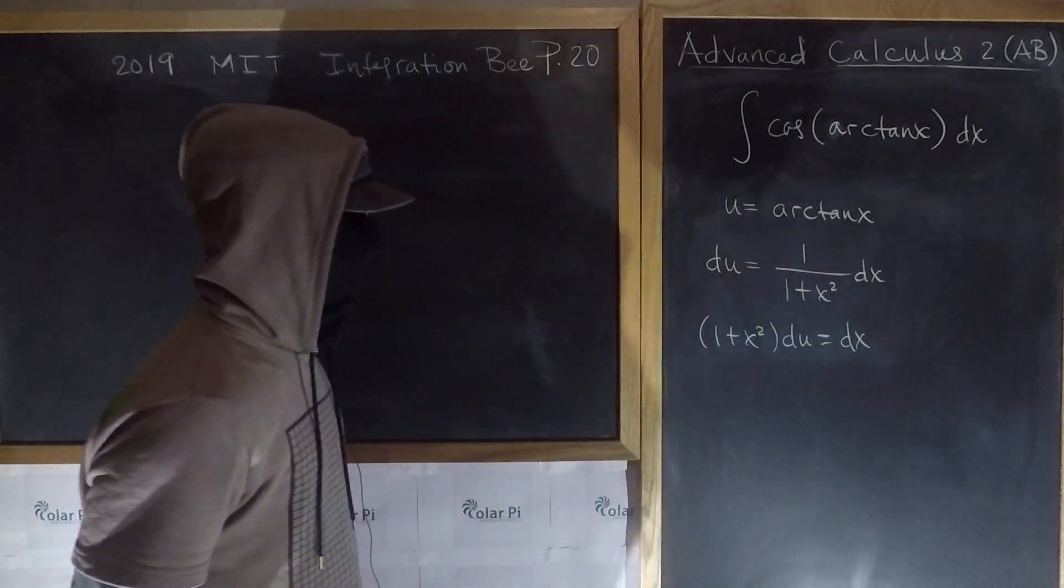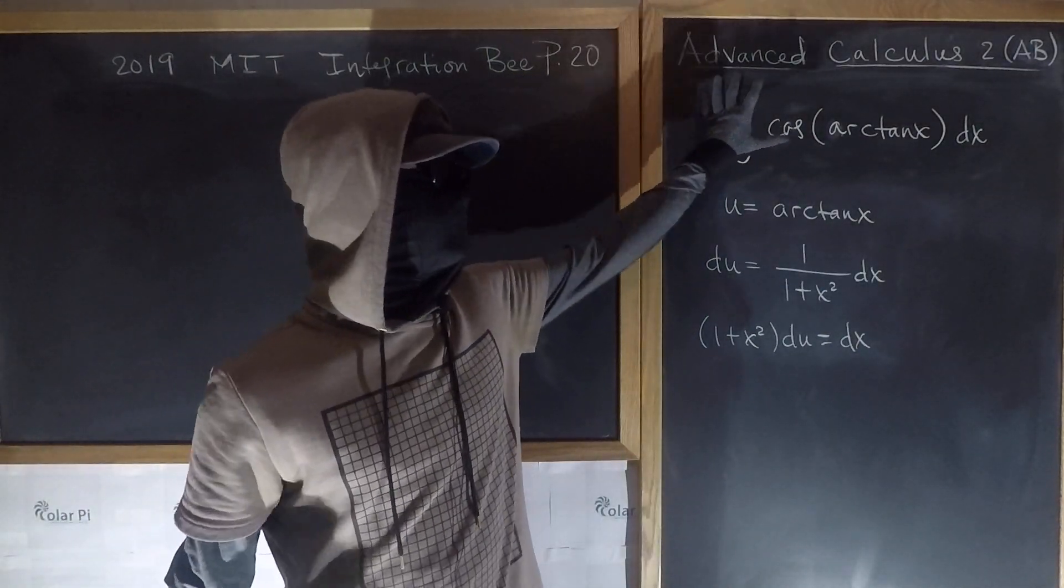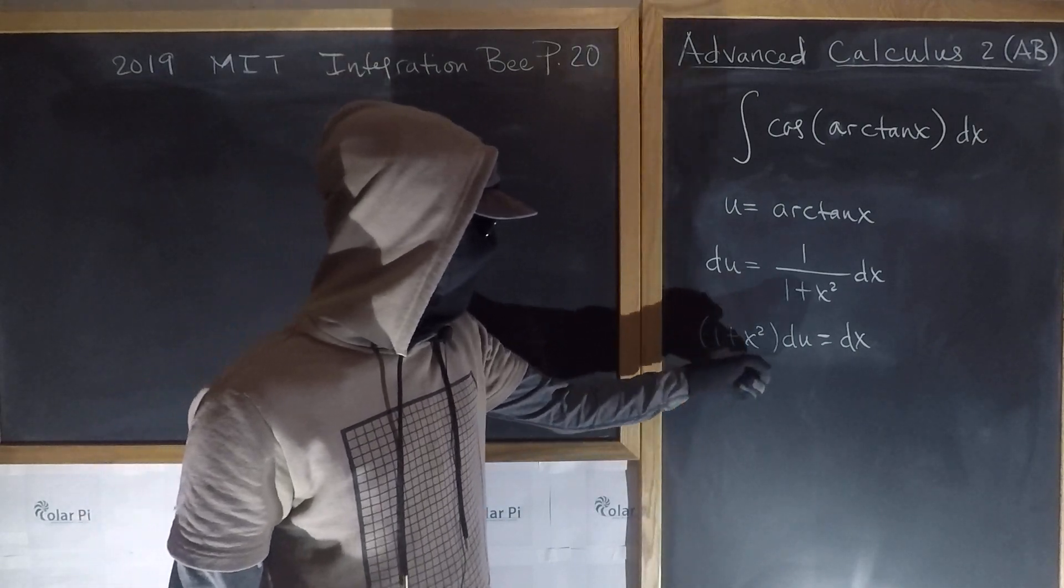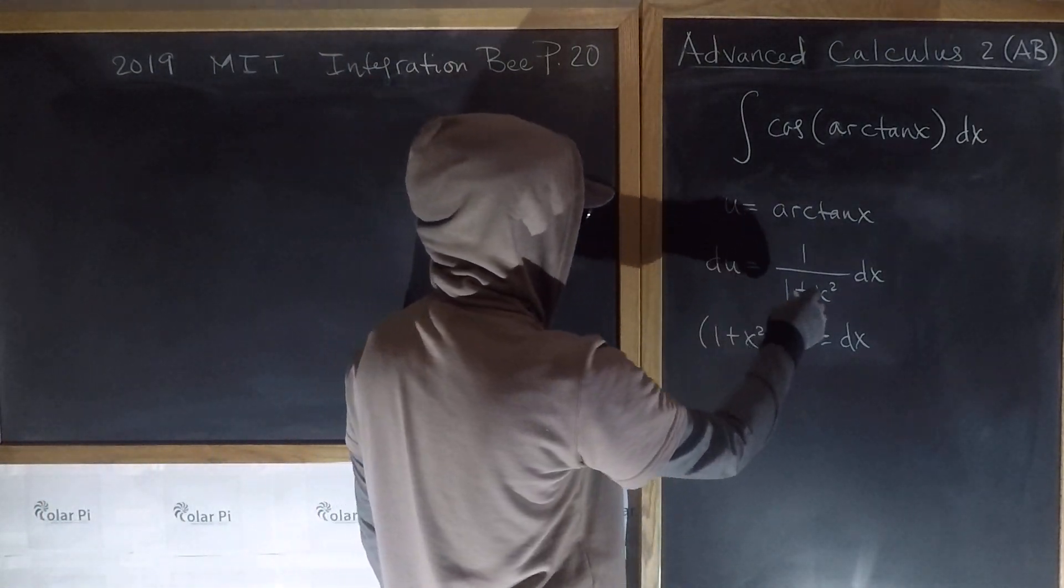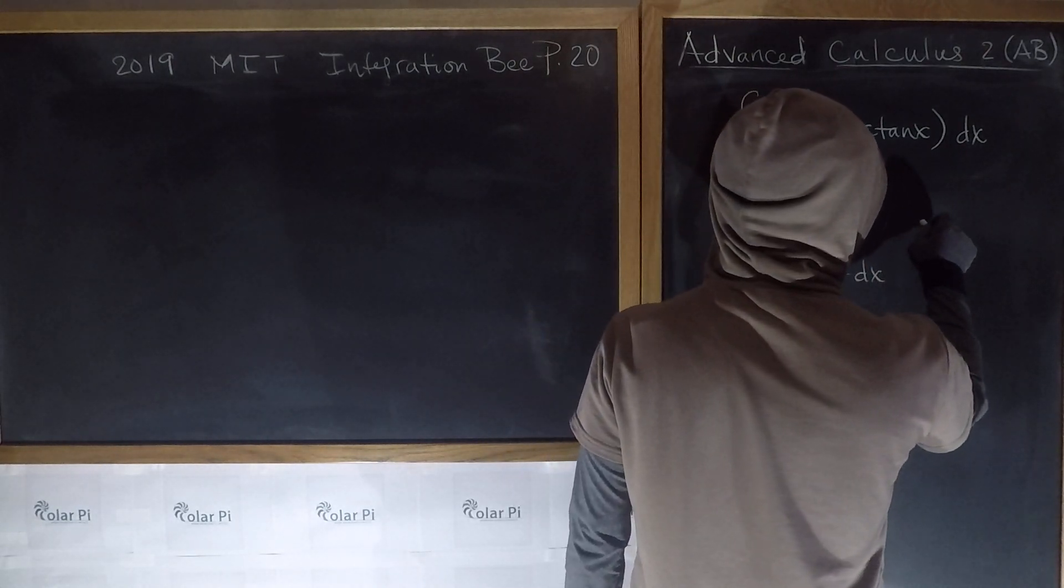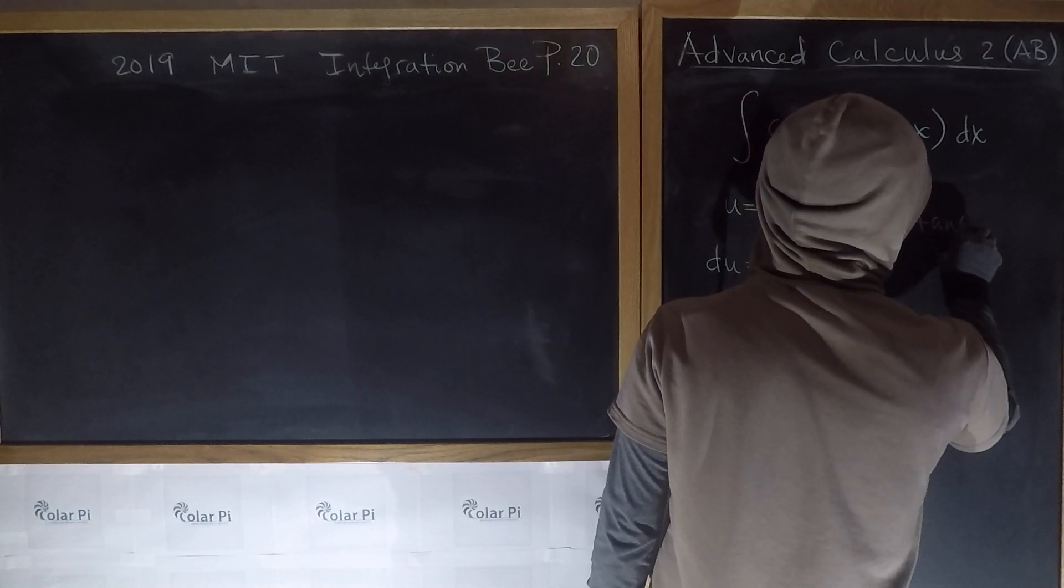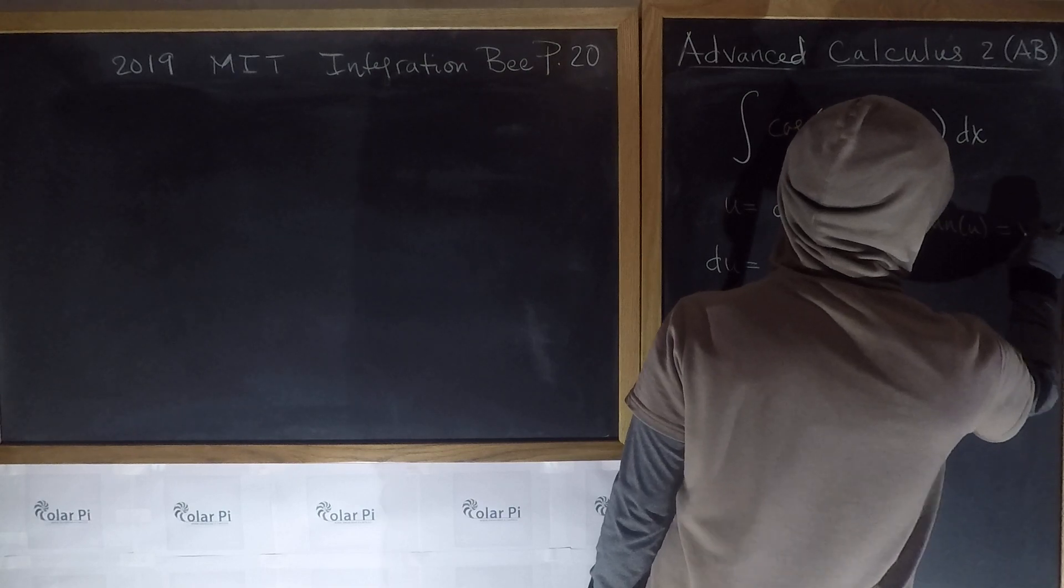But since our intention is to write this integral in terms of u, we don't like this 1 plus x² business. But we know because u is arctan(x) that tan(u) is equal to x.